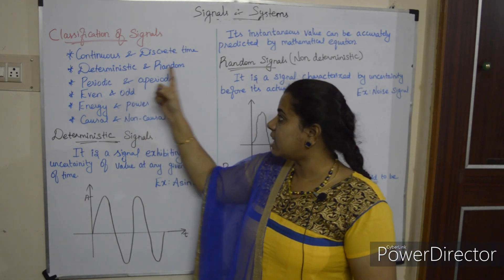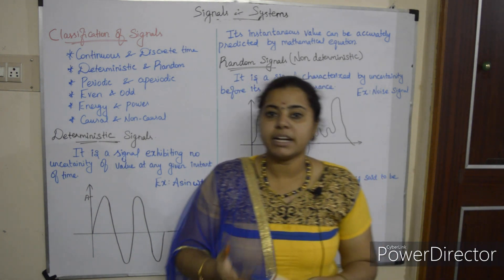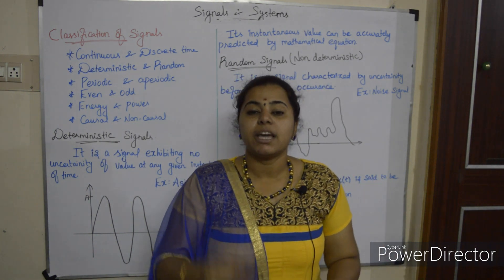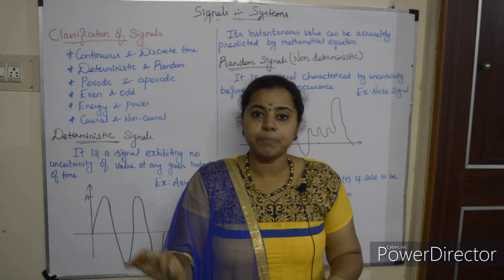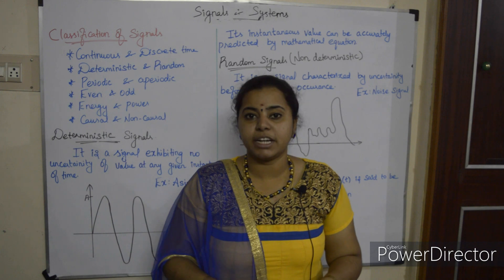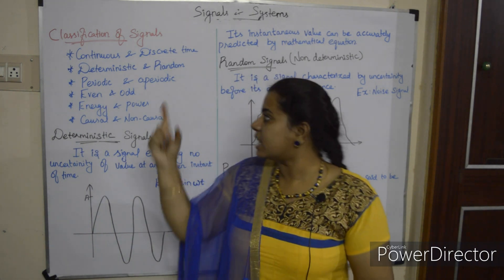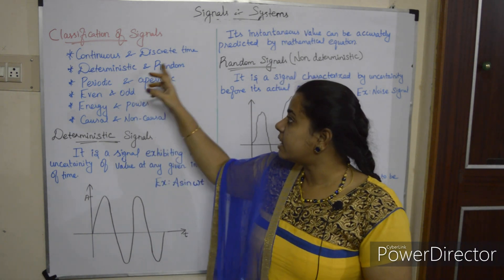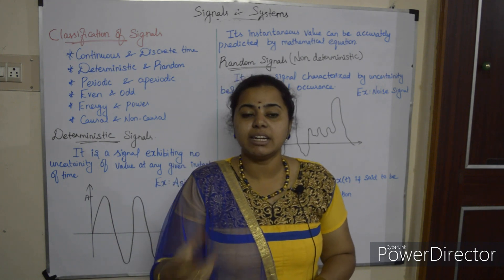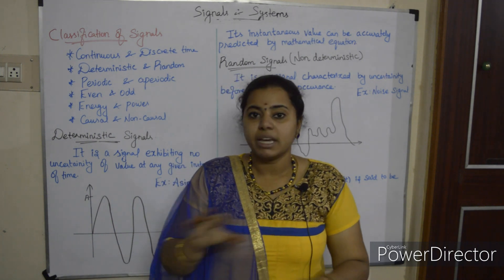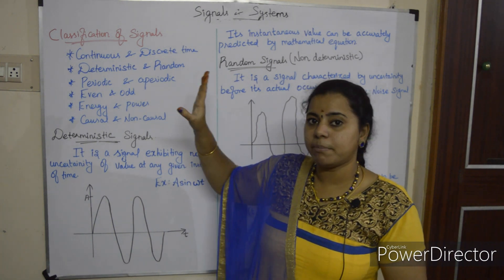The very first classification is continuous and discrete time. We already discussed continuous and discrete. What is meant by continuous? If we can define the signal for all values of time t, that is called continuous. Discrete means only at discrete intervals of time if we can define the signal, then that is called discrete.